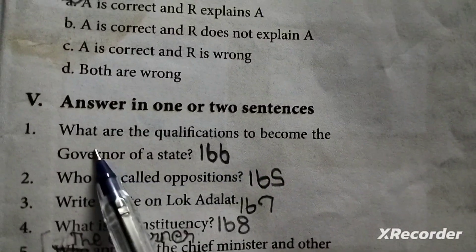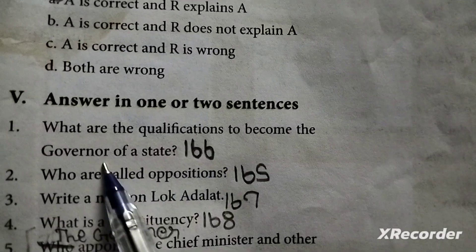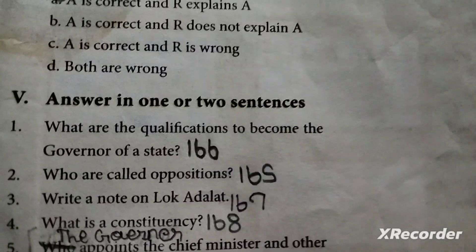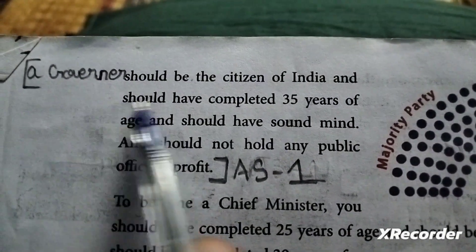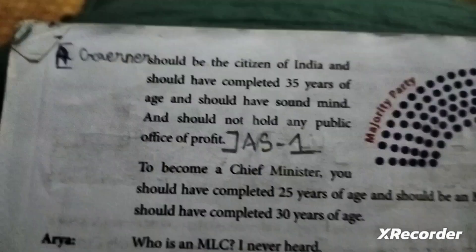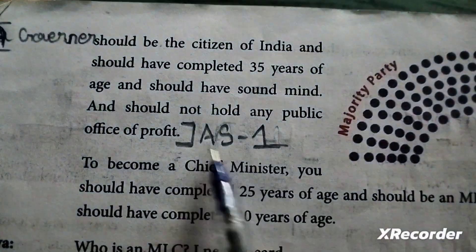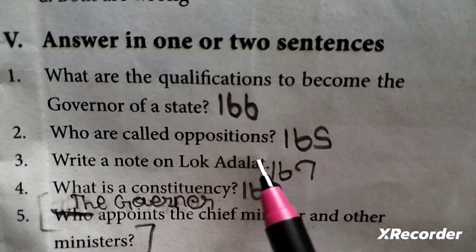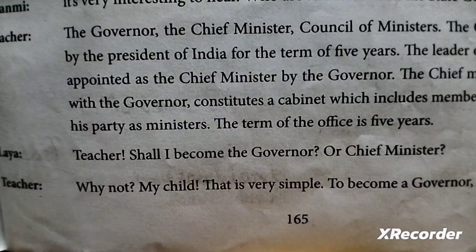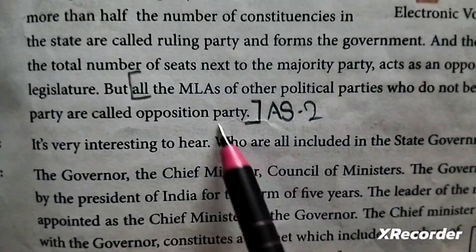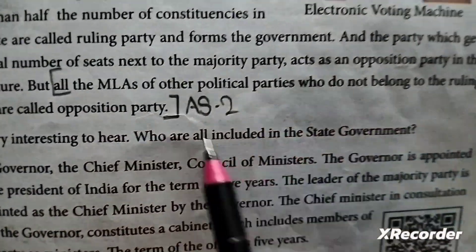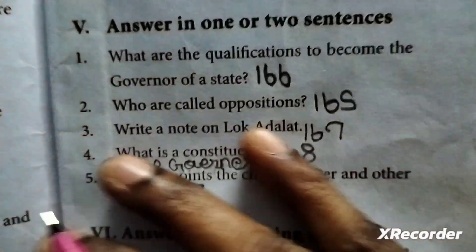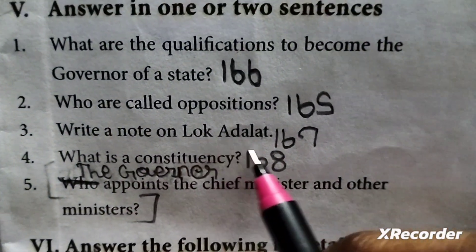Answer in one or two sentences. First question: What are the qualifications to become the governor of a state? Students from roll number 166 will answer. Second question: Who are called the opposition? All the MLAs of other political parties are called the opposition. Students from roll number 165 will answer. Third question: Write a note on Lok Adalat. Students from roll number 167 will answer.